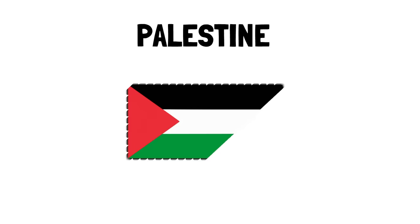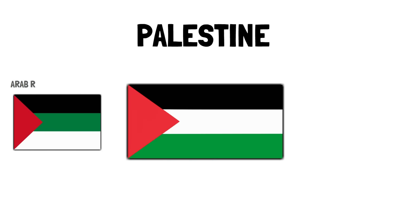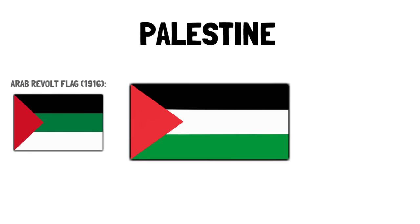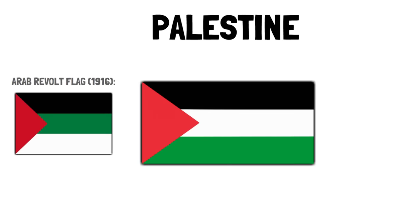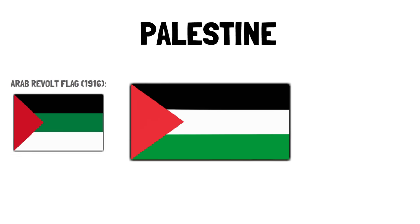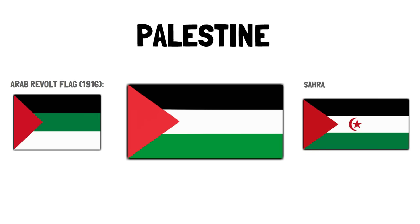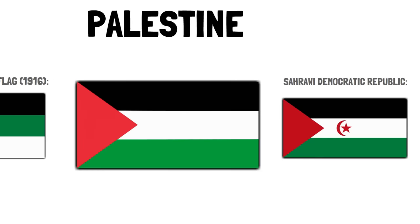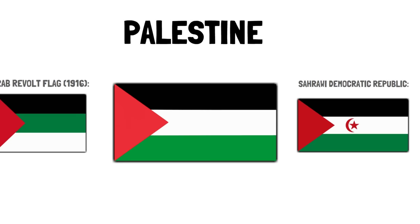The flag of nearby Palestine is very similar — only the red triangle is slightly different, without the white star within it. It is almost equal to the original 1916 Arab Revolt flag, only switching the green and the white. The flag of Western Sahara, the self-proclaimed El Sahrawi Republic, is equal, only adding a red crescent and star in the center of the white.